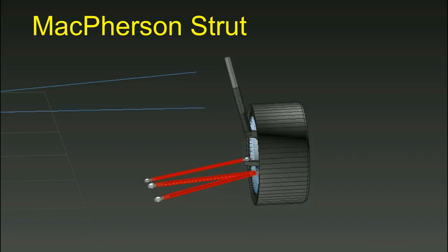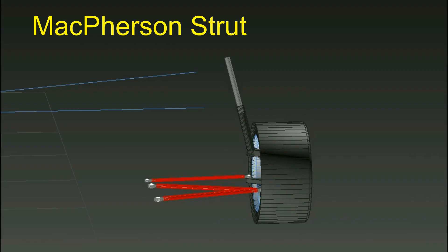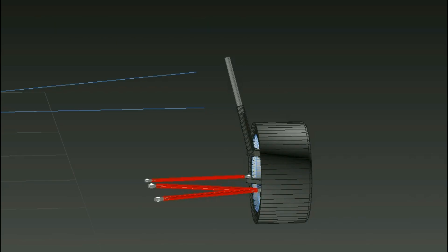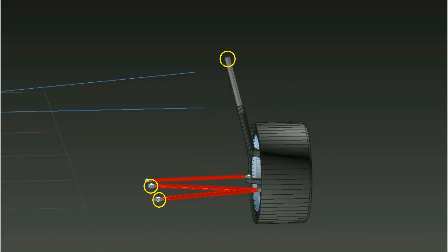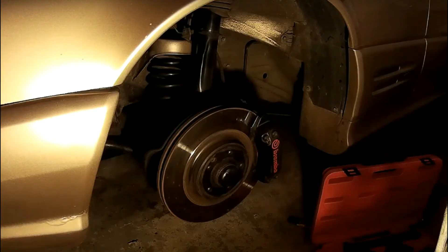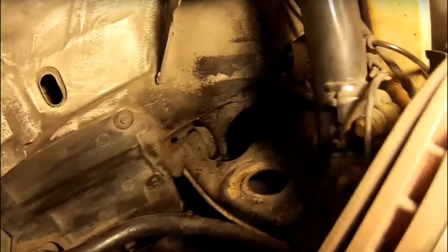Now for the McPherson strut, found in almost every production car's front suspension because it's cheap to implement. It uses the same lower control arm as a double wishbone, but the upper control arm is replaced by bolting the knuckle directly to the strut. It has three chassis attachment points: two for the lower control arm and one at the strut tower. Since most cars already have a strut tower, eliminating the upper control arm saves both cost and space.